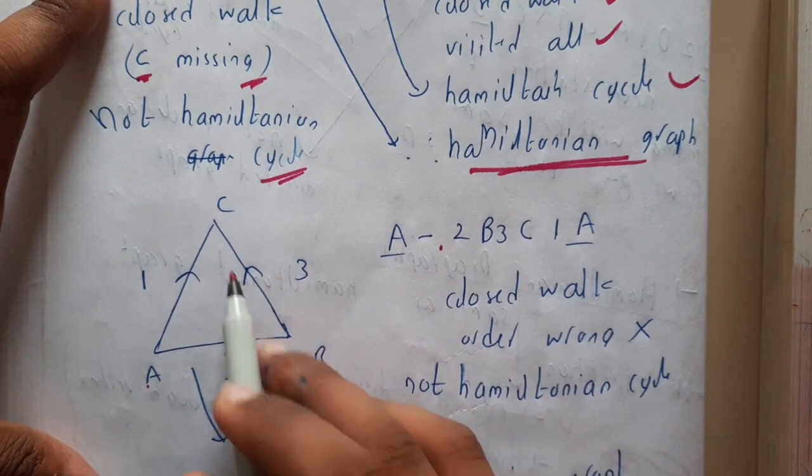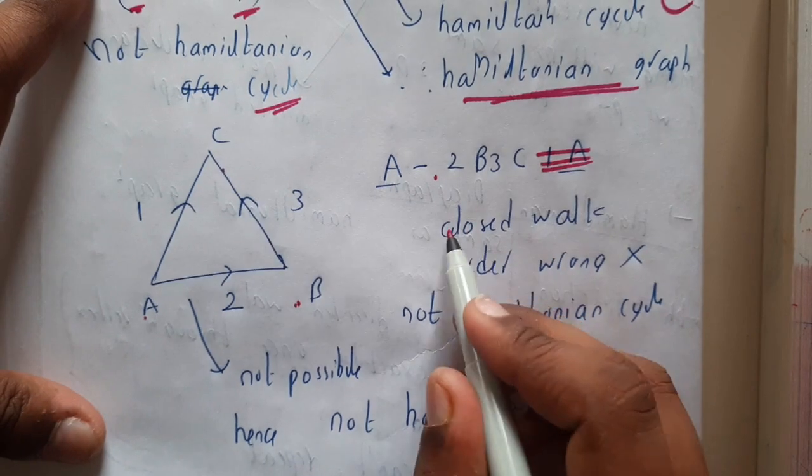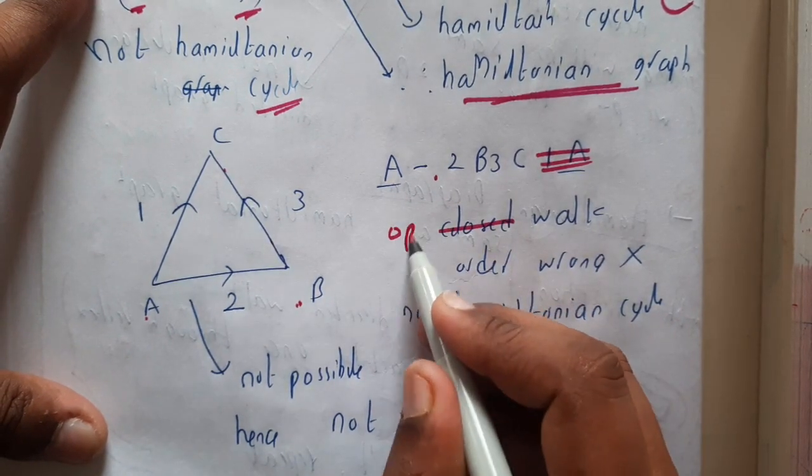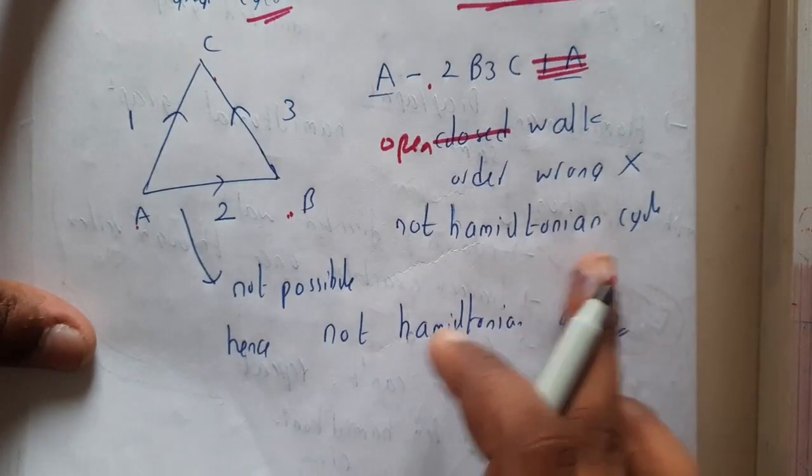A to B, B to C, C to A - this is not possible. It is not a closed walk, it is an open walk and the order is wrong. It is not a Hamiltonian cycle.